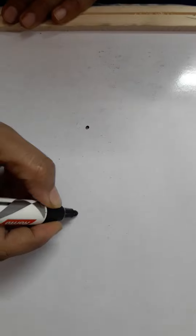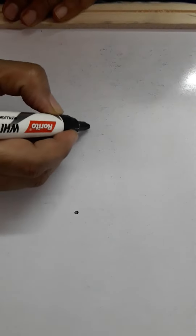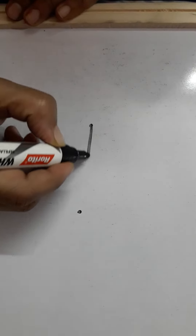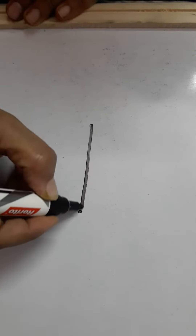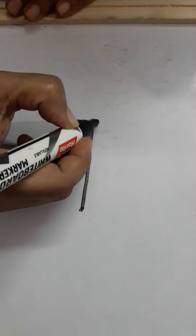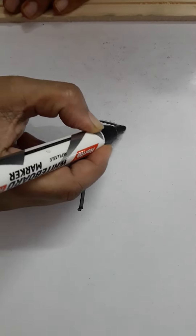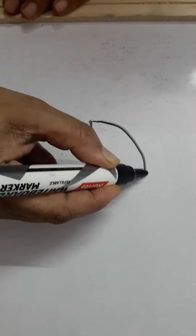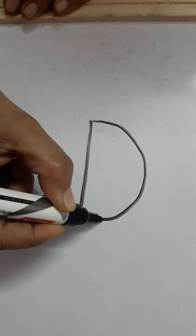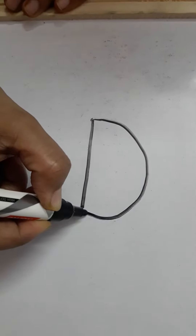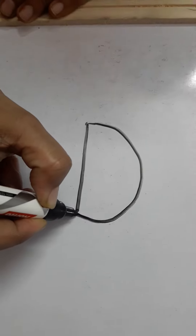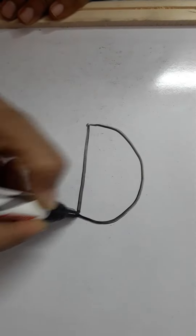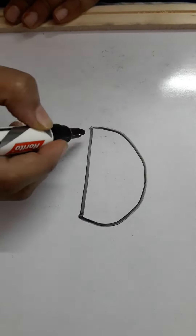Let us learn how to write letter D. Put two dots and draw one. Then make a curve from upper to middle line. This is letter D.